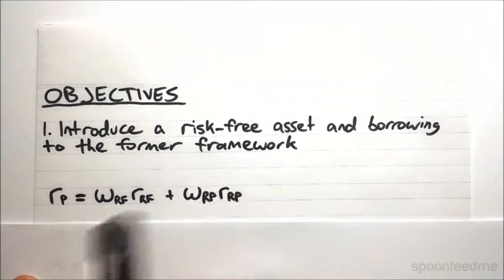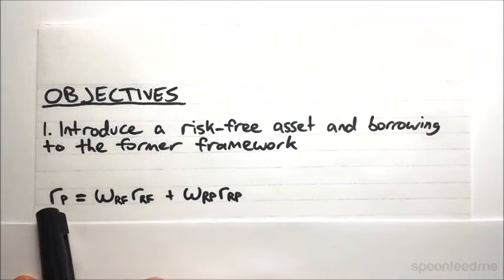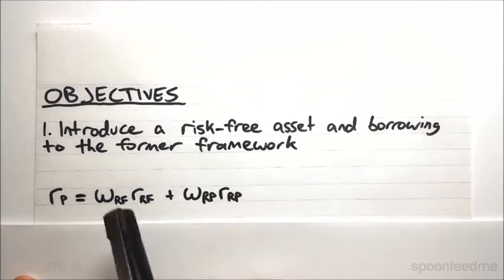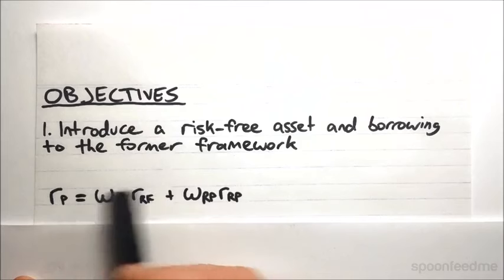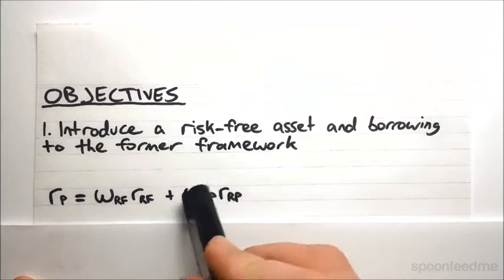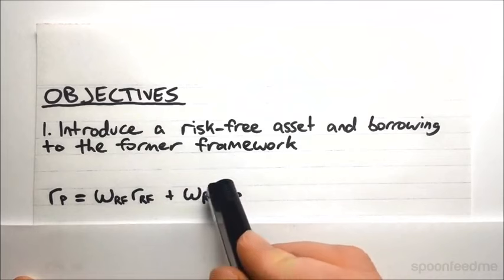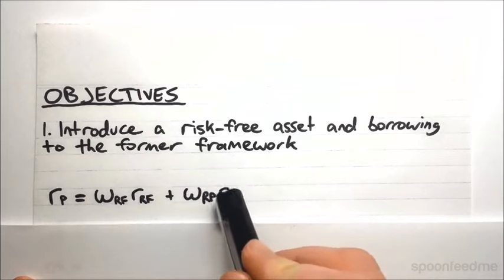Now the return on the portfolio is going to be this weighted sum where we've got a weight attached to the risk-free asset. We've got the risk-free rate multiplied by the weight plus a weight multiplied by the return of the risky portfolio.